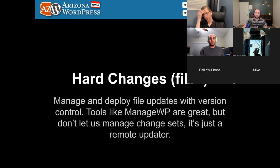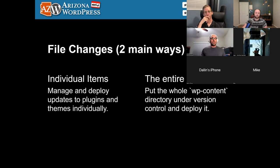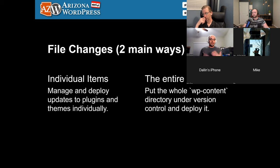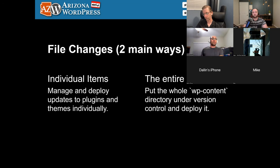There are two main ways to manage your files. You can do individual items — a repository for your theme and a separate one for custom functionality — managing and deploying them separately. Or, the preferred method with an asterisk: put the entire wp-content directory into a Git repo. That directory holds your plugins, themes, mu-plugins directories, and small config files. You can hand off the entire site, say 'install WordPress and check out this wp-content directory,' and they're up and running with all plugins and themes.